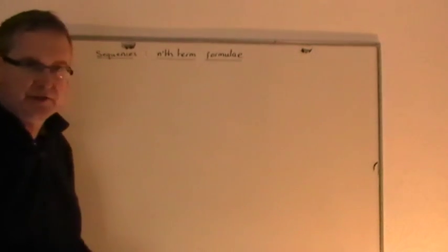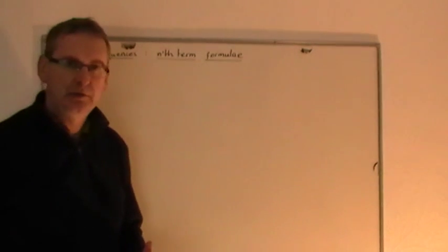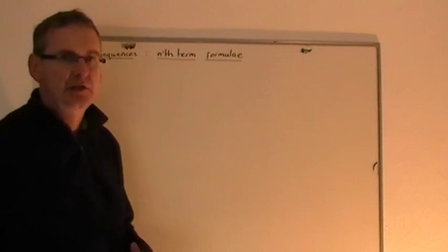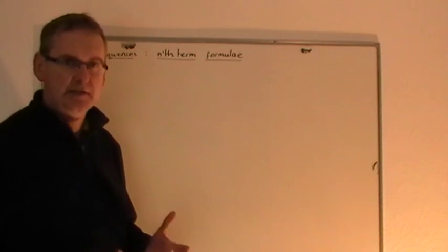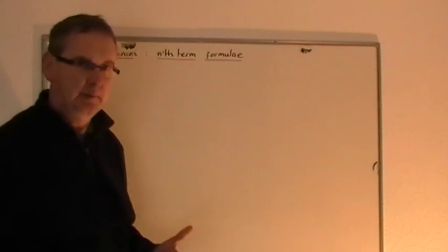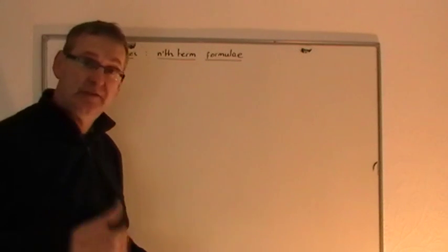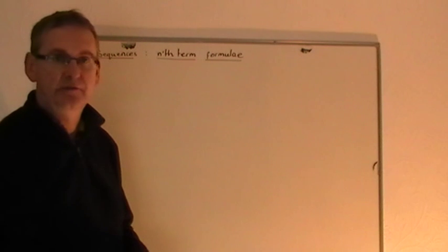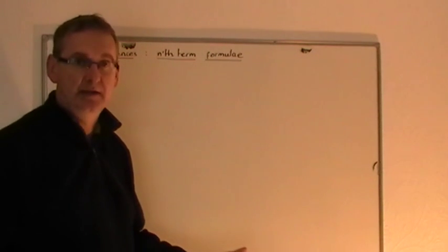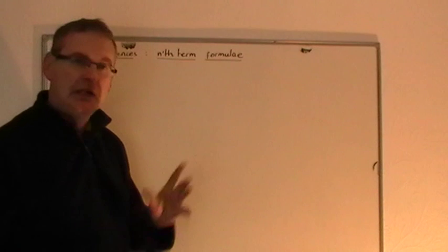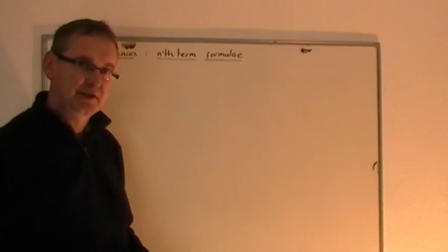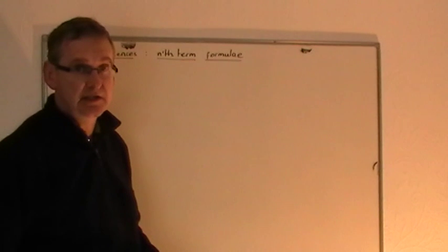Let's have a look at some more sequences. The previous video looked at sequences that led to an nth term formula such as 3n-1, 2n-2, or if they were decreasing, something like 16-2n. Now let's have a look at a different type of sequence and notice the subtle difference you see in these sequences.